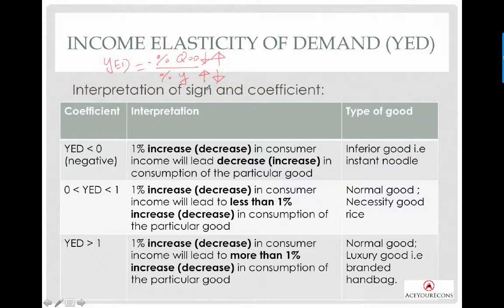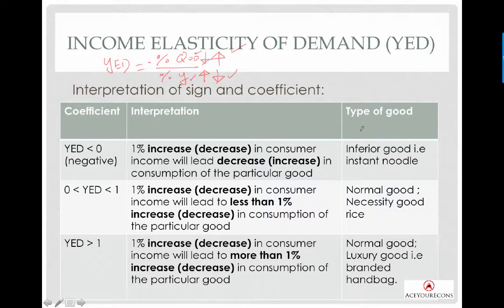With a pay cut or your mom withdrawing income, you will consume more instant noodles. Similarly, if your pocket money increases, you wouldn't want to eat instant noodles as much — you'd prefer to eat at a restaurant. So your quantity demanded for instant noodles will fall. This is the nature of inferior goods: the higher your income, the lower your consumption of this product, and vice versa.